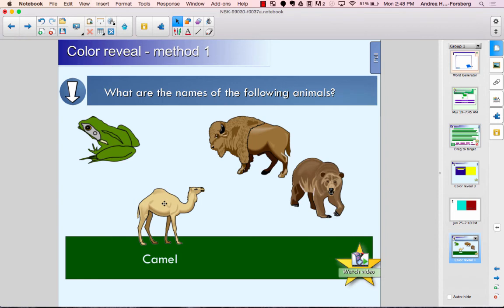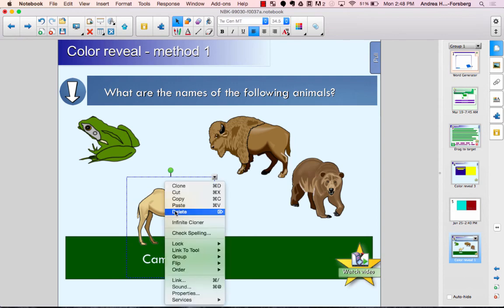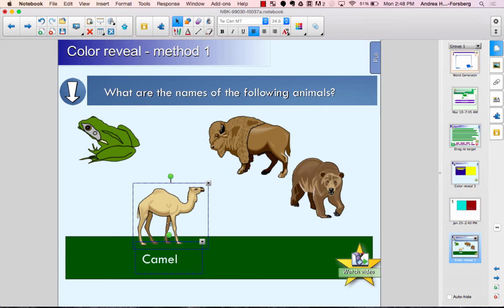This one is simple to set up as well. You would simply group. You'll notice if I click on this one and I ungroup it's actually the image and the text together. So you would have a picture and a text box.